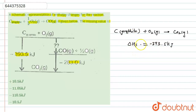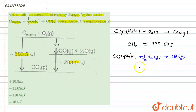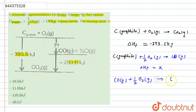The step-by-step reaction: C (graphite) reacts with half O₂ gas to form CO gas. The enthalpy of formation here is considered as x. Then CO gas reacts with half O₂ gas to form CO₂. The enthalpy of formation for this step is minus 283.0 kilojoule.